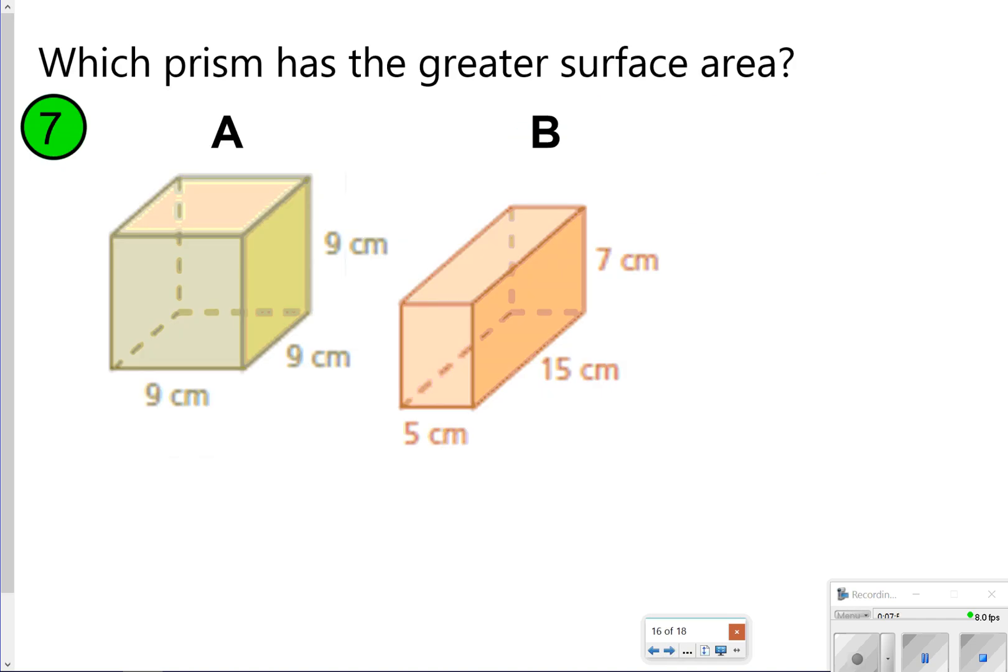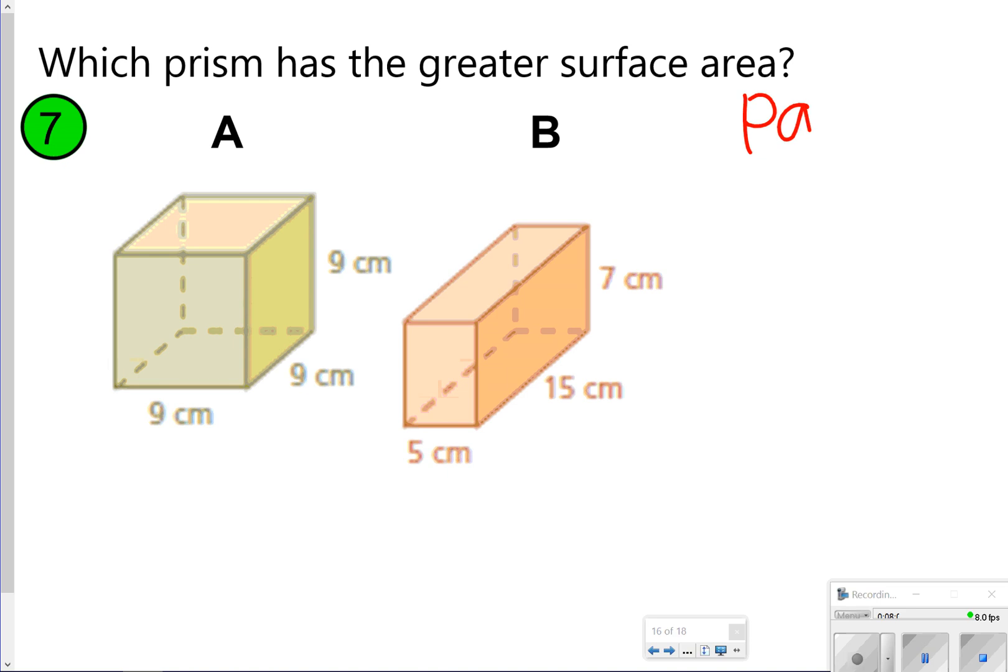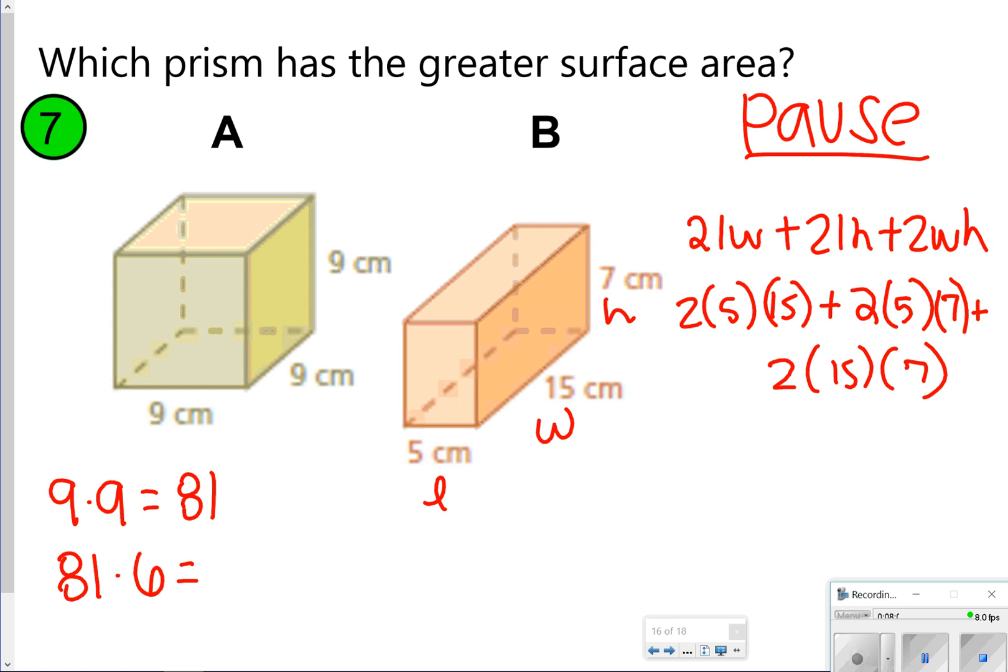The last one, you're just going to tell me which prism has a greater surface area. Both of these are rectangular prisms, and technically letter A is called a cube. So just notice all the numbers are the same. Let's go ahead and pause the video right now to try number 7. Once you're done, click play. All right, what I've gone ahead and done here is just set up the problem. Over here in your cube, notice that each face is the same, and since there are 6 faces, I can just find the area of 1 face, which is 9 by 9, and then find that it would be 81, and then multiply 81 by 6. 81 times 6 is going to give me 486 centimeters squared.